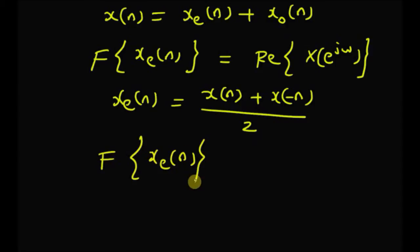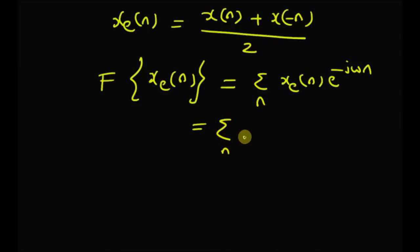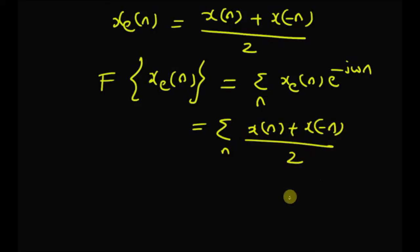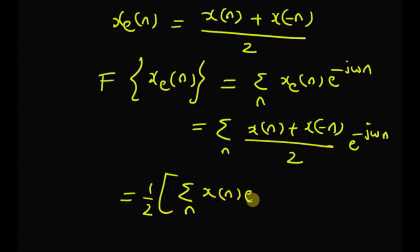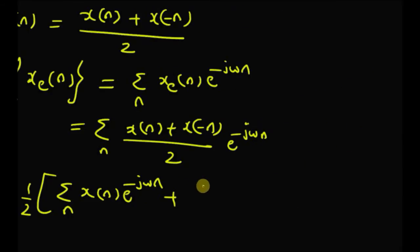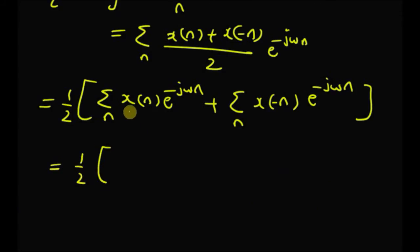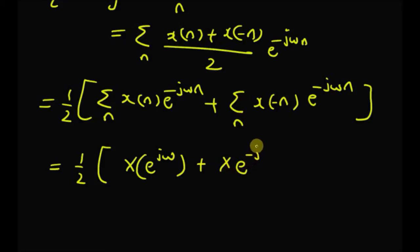By using this definition, the DTFT of x_e(n) equals the summation over n of x_e(n) e^{−jωn}, which becomes the summation of [x(n) + x(−n)]/2 multiplied by e^{−jωn}. This splits into two sums: (1/2) times the sum of x(n)e^{−jωn}, which is by definition X(e^{jω}), plus the sum involving x(−n), which is the DTFT with ω replaced by −ω, giving X(e^{−jω}).